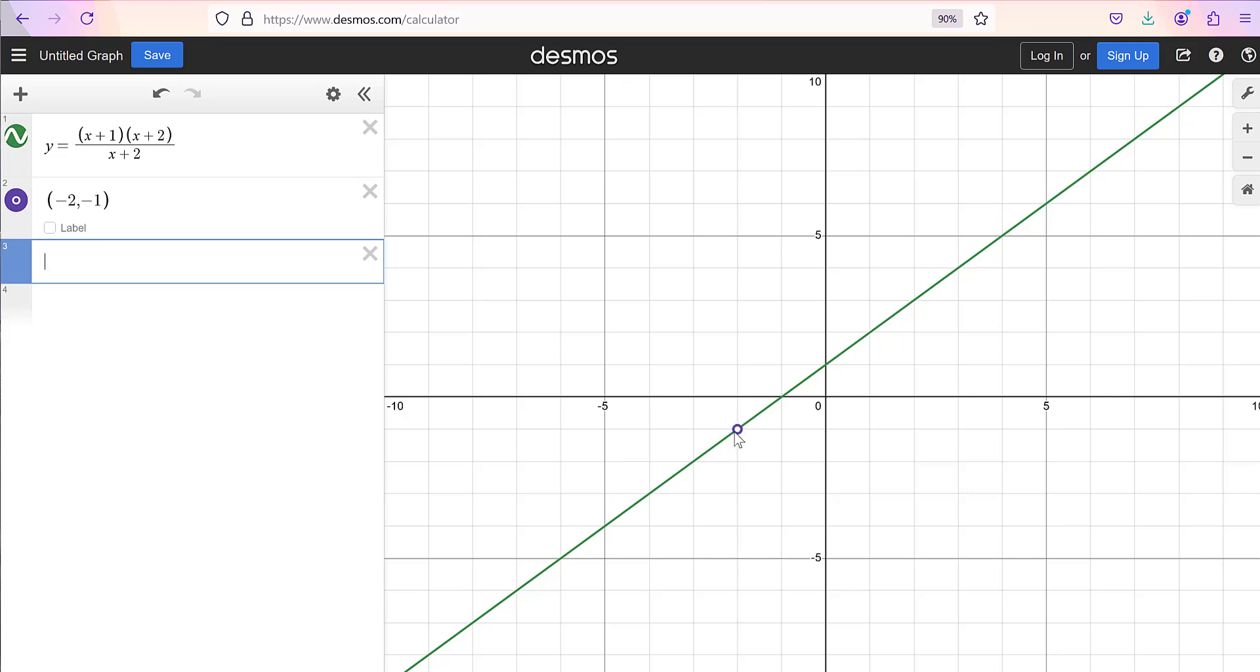But when I get to this point negative 2, comma negative 1, that is an open circle, it's an undefined point in the graph. And so if I wanted to talk about the domain of this function now, it's really obvious. I've got all the x values from negative infinity up to this value but not including x equals negative 2, and then on the other side I've got everything from negative 2, not including it, to positive infinity.